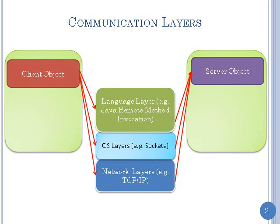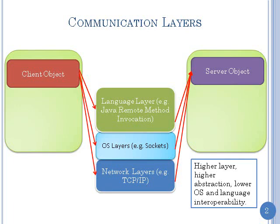So, Java Remote Method Invocation. What's the trade-off? The higher the layer, the more abstraction. But the lower the layer, the more chance it is that it is in other systems also — so there's more interoperability possible. That's yet another dimension: interoperability, abstraction, flexibility.